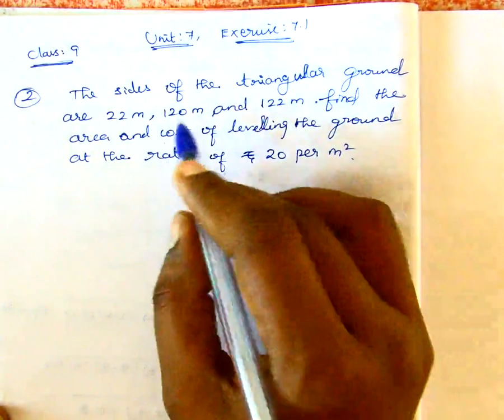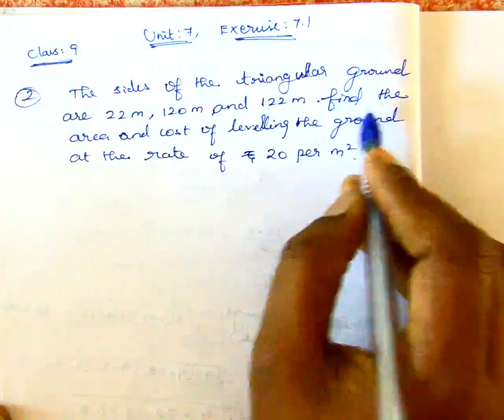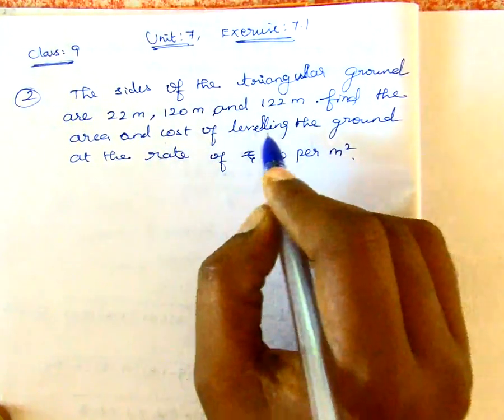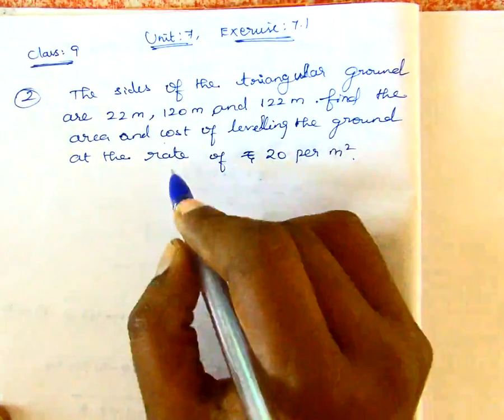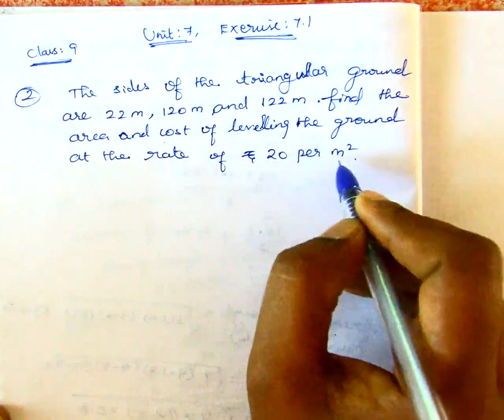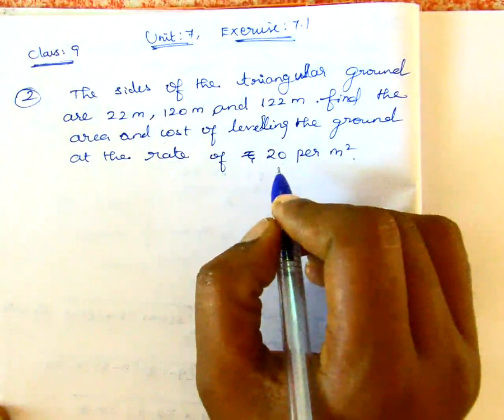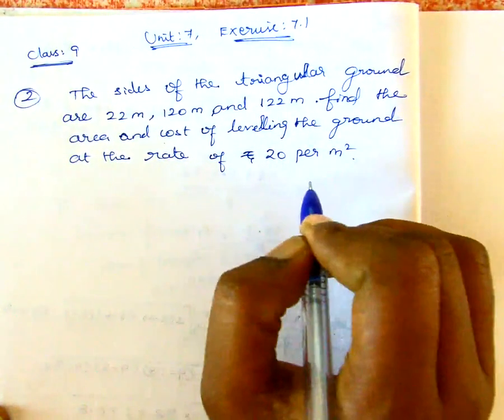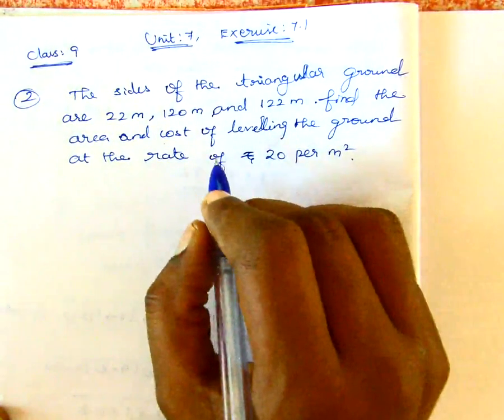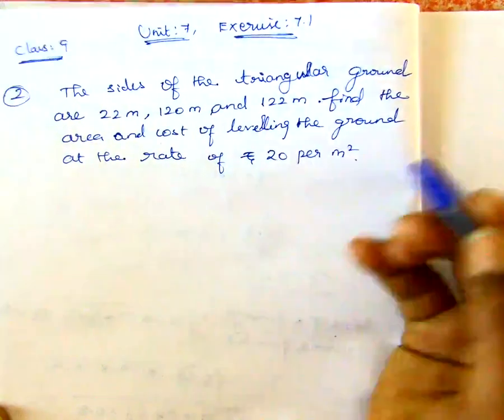So, on the triangular ground, the size could be done. Find the area and the cost of leveling the ground at the rate of Rs. 20 per meter square. That is, 1 meter square 20 rupees, the ground level is done. So the first ground level is done.